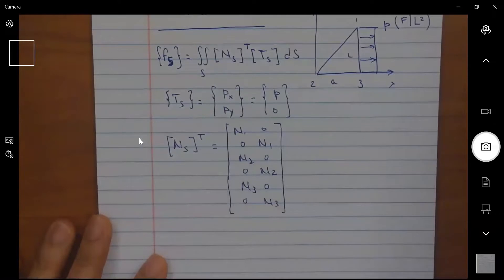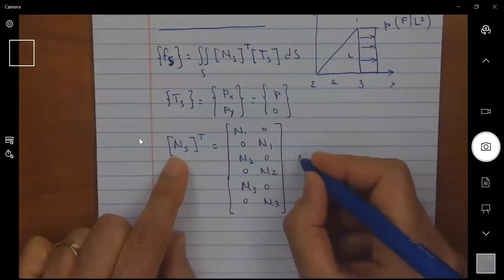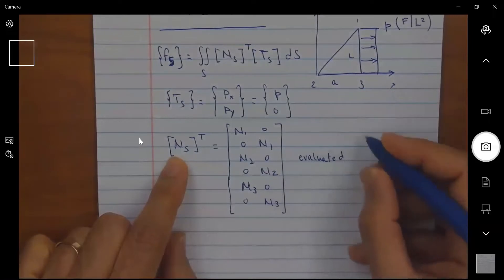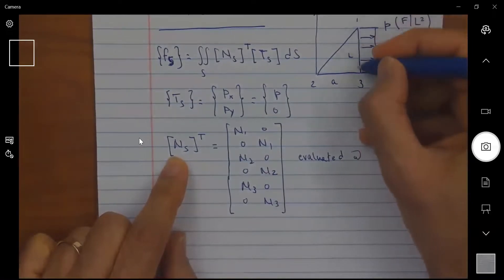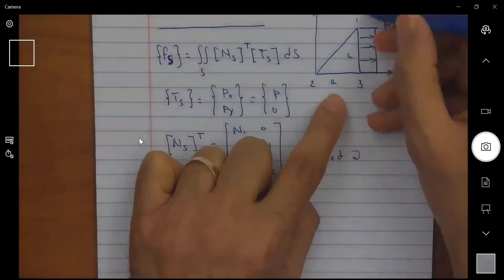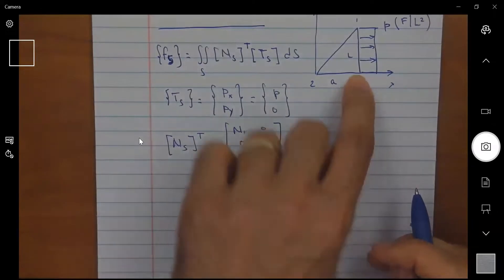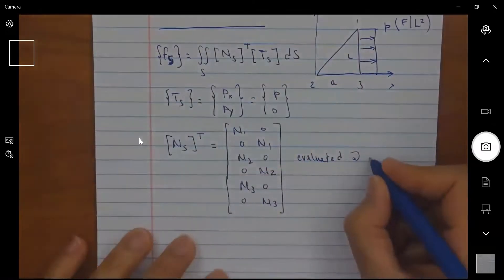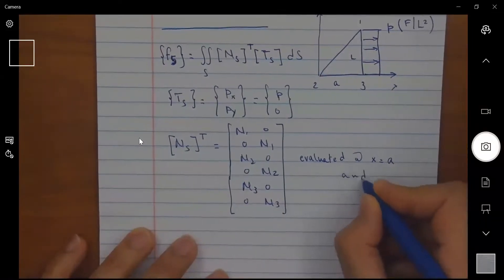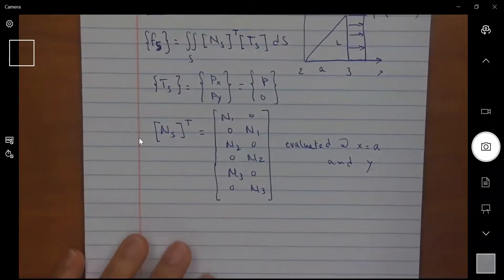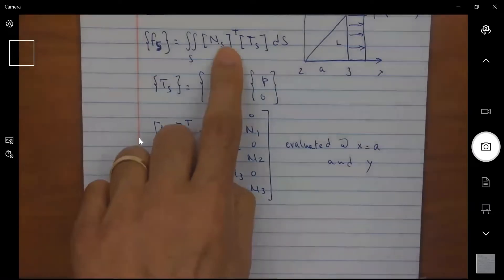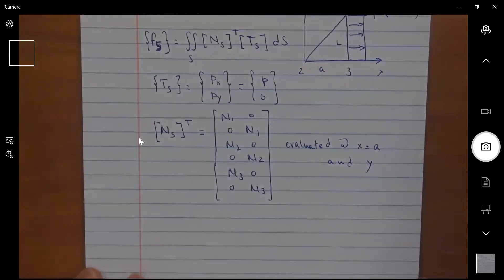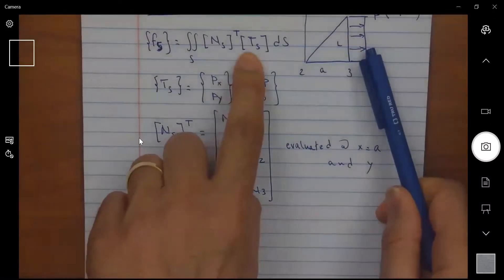All of these shape functions, as you recall, are functions of X and Y. So when I say N S, all of them are evaluated at the ordinates of that surface. So if I look at that surface, one, three, X is equal to A and Y remains variable. So evaluated at X equal A and Y. Anytime you see the subscript S, this indicates that the function is evaluated along the surface where the traction force T S is applied.